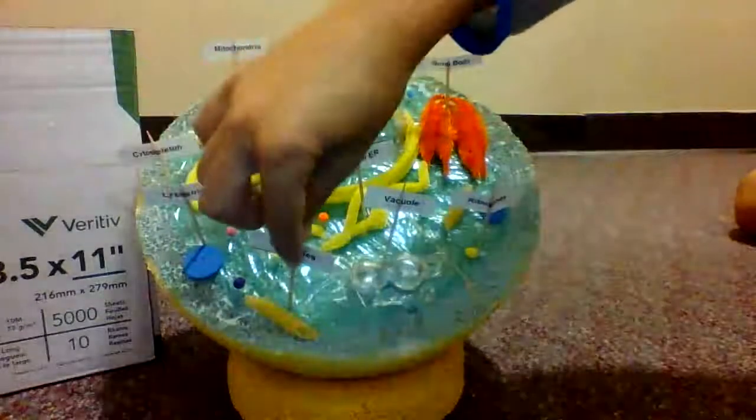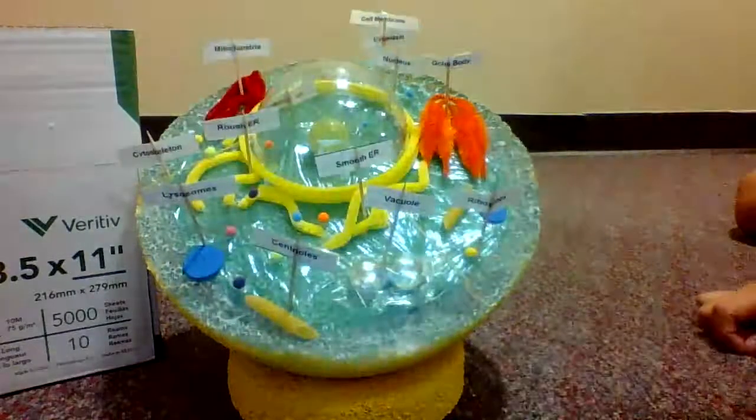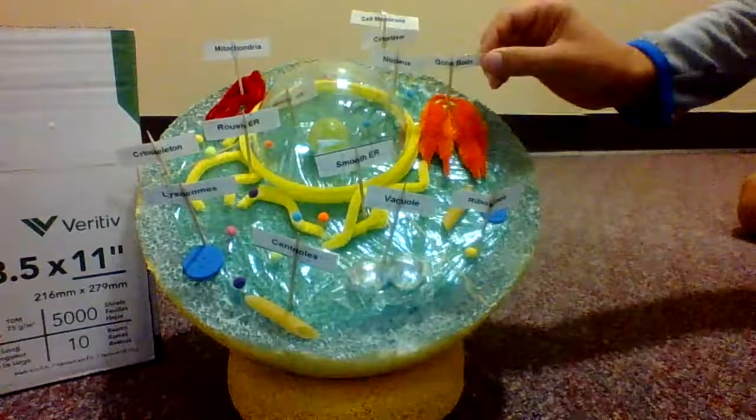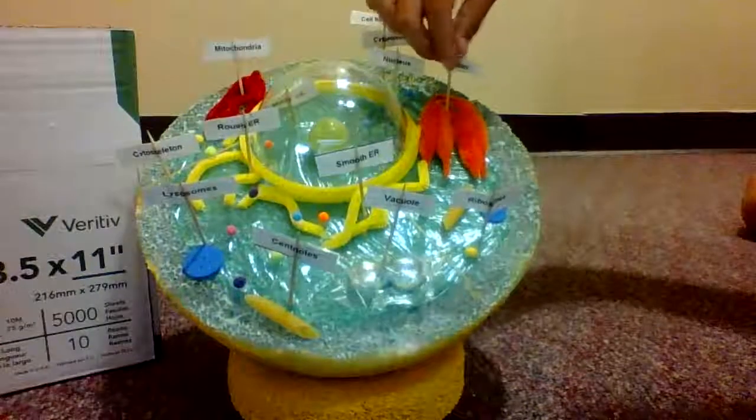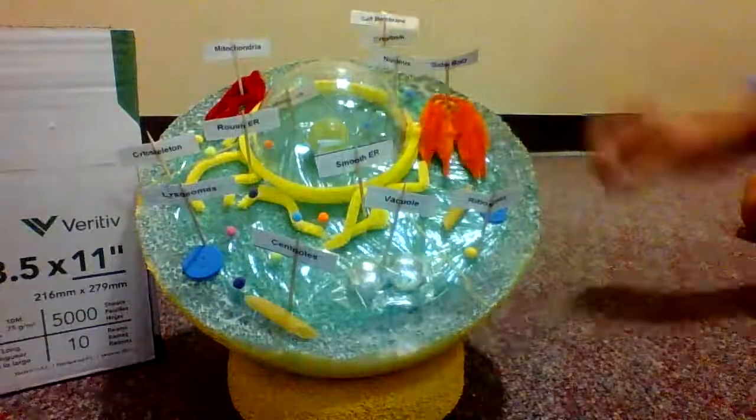Next up is the centriole. I don't have a lot of information for this one, but I really know it splits chromosomes. Golgi body is basically like the UPS, it's a transporting system.